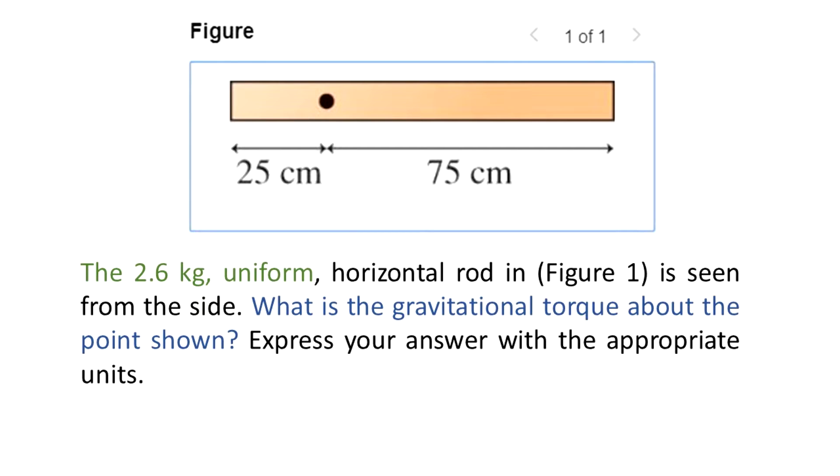The 2.6 kg uniform horizontal rod in figure 1 is seen from the side. What is the gravitational torque about the point shown? Express your answer with the appropriate units.